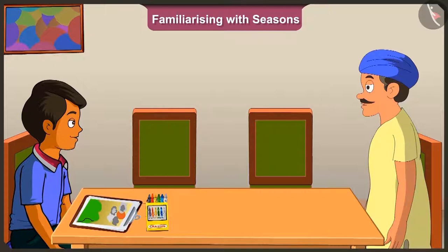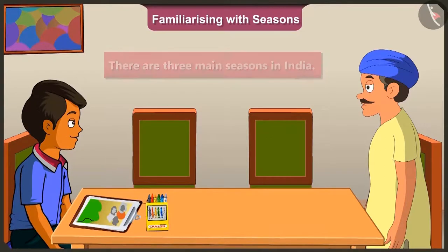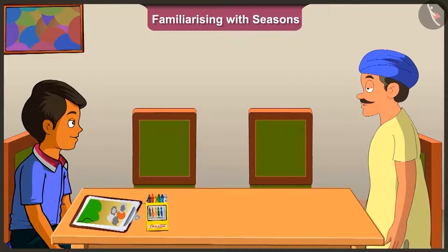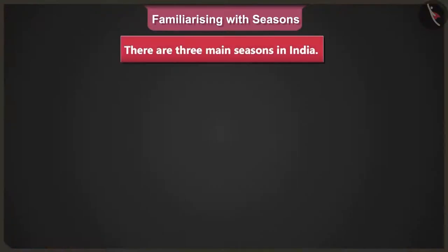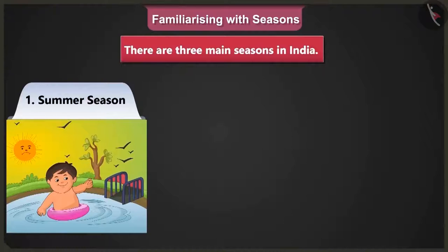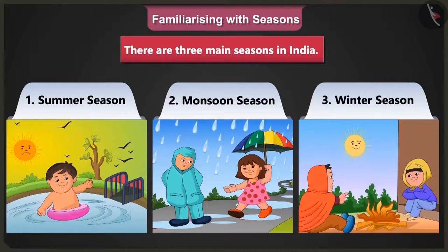Okay, so how many seasons are there in our country? There are three main seasons in India. They always come in the same order in the year. What are these three seasons? Hot means summer season, rain means monsoon season, and cold means winter season.